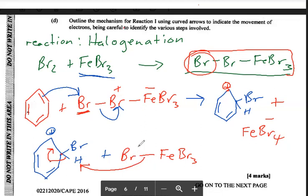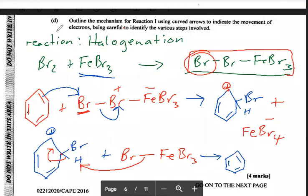For this mechanism, you get three products: the brominated benzene ring product, HBr, and the regenerated catalyst FeBr3. This hydrogen bonds with the bromine and you get back the catalyst. This one gives three products: the benzene substituted product, HBr, and the catalyst. These are the only two mechanisms for aromatic chemistry — nitration and halogenation. These are the only two mechanisms for benzene that you have to know for CAPE.